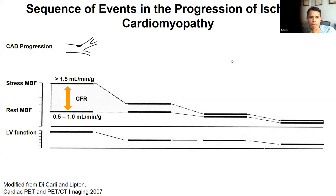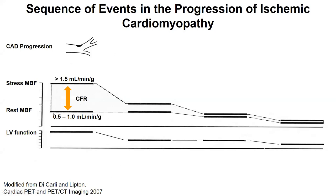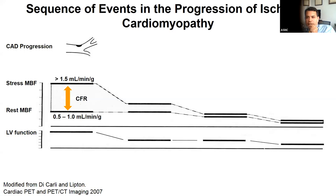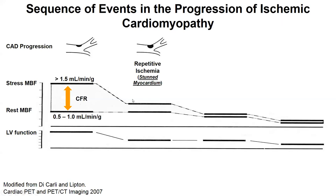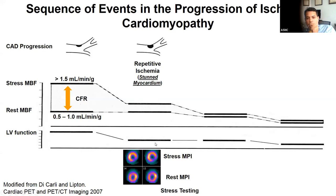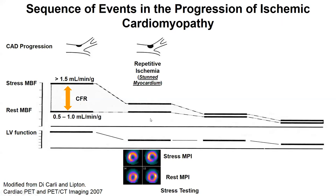How does this all fit together? It starts with a small plaque narrowing the coronary lumen. At this point, stress myocardial blood flow and coronary flow reserve are probably preserved. LV function is unaffected, though the patient may already be developing diastolic dysfunction. As coronary atherosclerosis progresses, patients can develop repetitive ischemia, leading to stunned myocardium, with a drop in stress myocardial blood flow and flow reserve, and worsening systolic function. A stress test would show reversibility in the affected area.